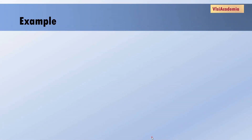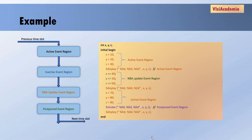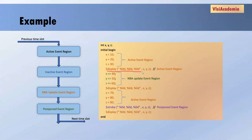Now let's see one complete example for all these event regions. First, all active event regions will be done. The first statement is a blocking assignment, which comes under the active event region. So X, Y, Z will be assigned with 10, 20, 30. $display also comes under the active event region, so it will display the values of X, Y, Z — printing 10, 20, and 30.